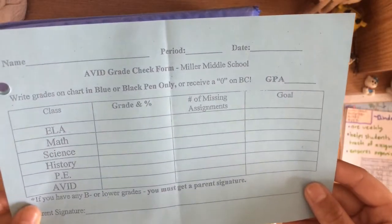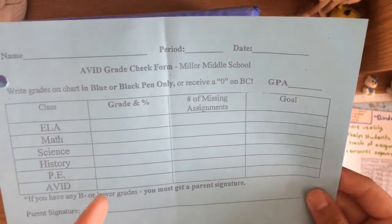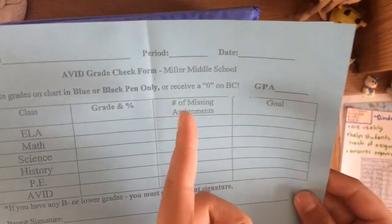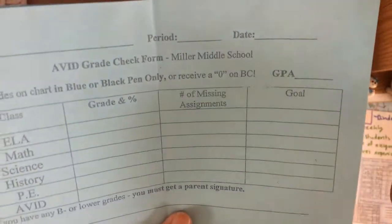The first part to a binder check is writing down your grades. First, you have to write down the letter grade, then the percentage for each class. Then, you would write down the number of missing assignments for each class. Finally, you would write down your goals.